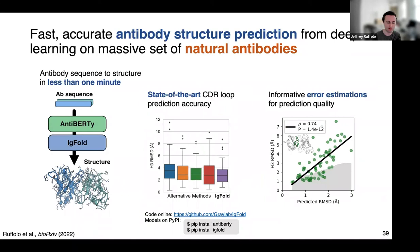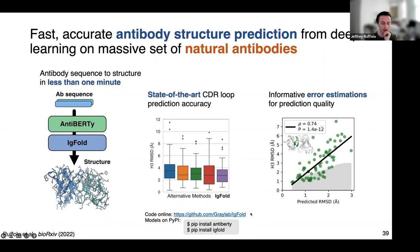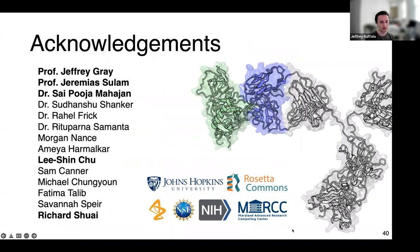To summarize: IGFold allows you to take an antibody sequence and predict a structure in less than a minute without requiring GPUs — it can run on a CPU machine. The predictions are state-of-the-art, matching AlphaFold for paired antibody structures, though lagging behind for nanobodies. With predictions we have informative error estimations, so you can know whether your CDRH3 loop is likely to be reliable or not. All code is available on GitHub and installable via PyPI. Thanks to everyone in the lab, including advisors Jeffrey Gray and Jeremiah Sulam, Pooja Mahajan, Li-Shin Chu, and Richard.